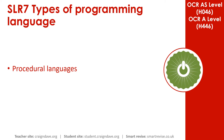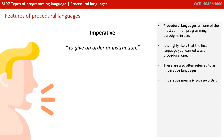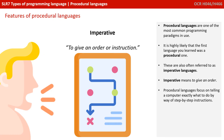In this video, we discuss procedural languages. Procedural languages are one of the most common programming paradigms in use. It's highly likely that the first language you learned was a procedural one. They're often referred to as imperative languages, where the word imperative literally means to give an order or an instruction. Procedural languages focus on telling a computer exactly what to do by the way of step-by-step instructions.